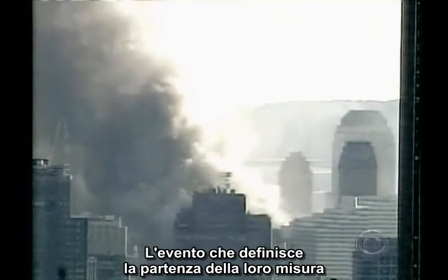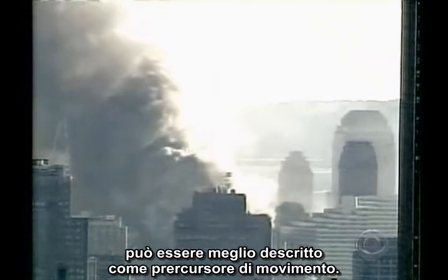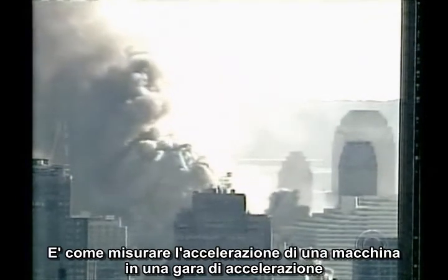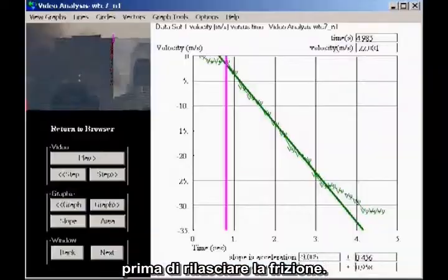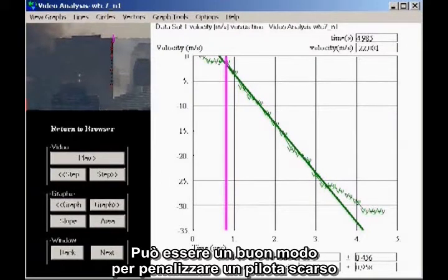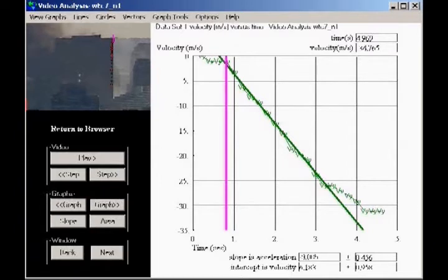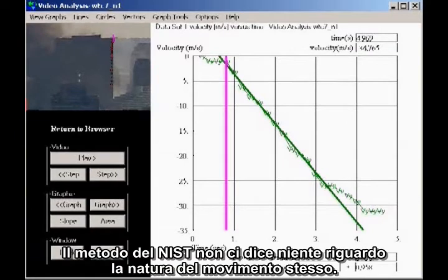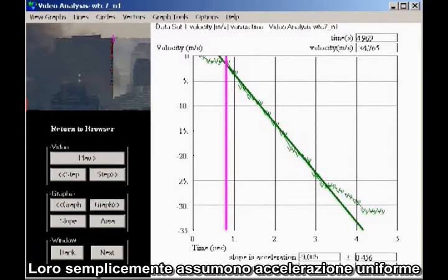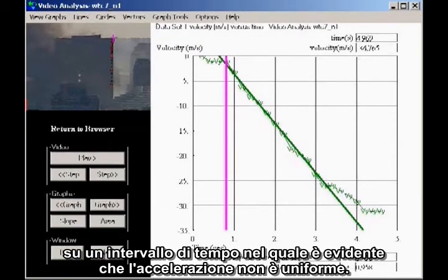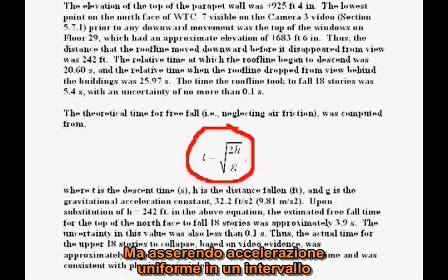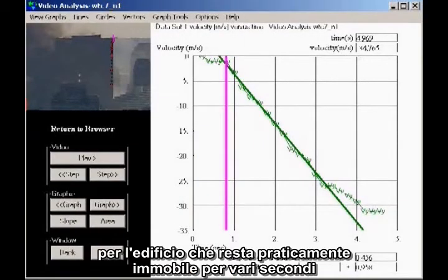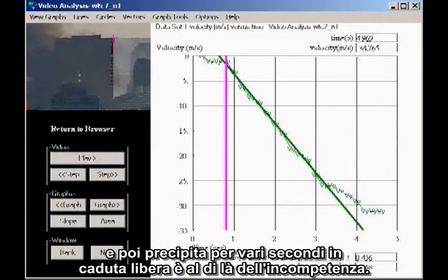The event triggering the start of their measurement could more accurately be described as precursor movement. This is like timing the acceleration of a car in a drag race where the starting light goes on, then the driver revs his engine a few times before letting out the clutch. It may be a fair way to penalize a sloppy driver, but it doesn't say anything about the acceleration of the car once it is actually moving. This method tells us nothing about the nature of the motion itself. They merely assume uniform acceleration over a time interval in which it is clear that the acceleration is not uniform.